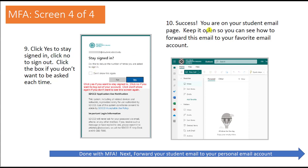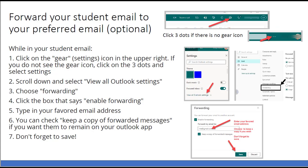The final screen relating to multi-factor authentication is when you're actually on your student email page. Keep it open because the next step shows you how to forward this email to your favorite email account. This is optional — if you want to continue viewing your email in the Outlook account, you can skip this step. But if you want to send all these emails to your personal email account, here's how you do it.